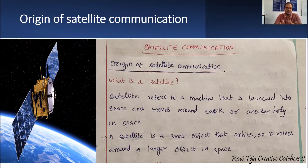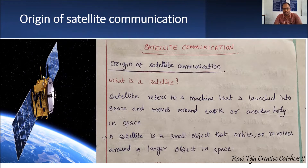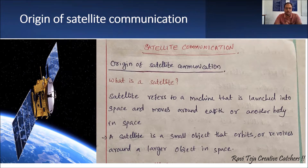A satellite which is human-made is designed to revolve or move around the earth. Similarly, any object in space rotating around another body in the same space can also be considered as a satellite. To keep it simple, a satellite is a small object that orbits or revolves around a larger body in space.